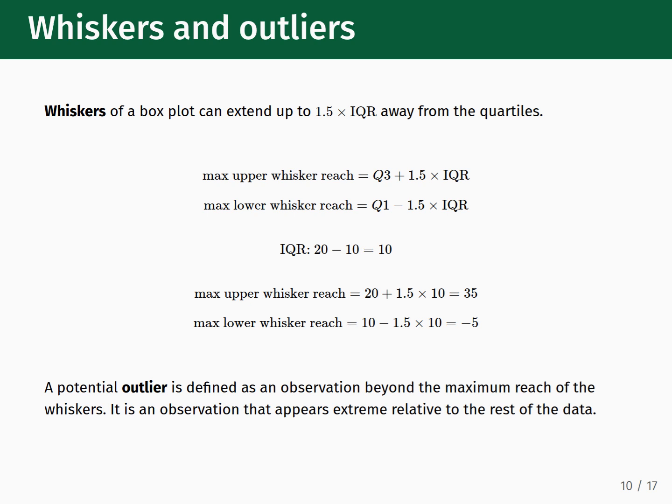So how are the lengths of the whiskers defined? The whiskers in a box plot can extend up to one and a half times the interquartile range away from the first and third quartiles. As a formula, the maximum of the upper whisker reach is the Q3 value plus 1.5 times the IQR. The maximum of the lower whisker reach is the Q1 value minus 1.5 times the IQR. So if, for a given data set, we compute the IQR to be equal to 10, then the maximum upper whisker reach becomes 35 and the maximum lower whisker reach becomes negative 5. A potential outlier is then defined as an observation beyond the maximum reach of the whiskers. It is an observation that appears extreme relative to the rest of the data.